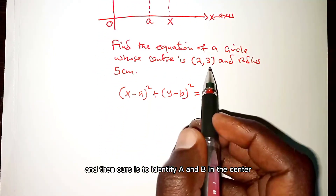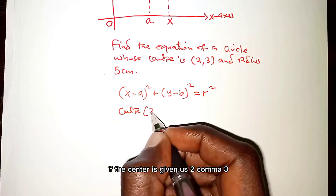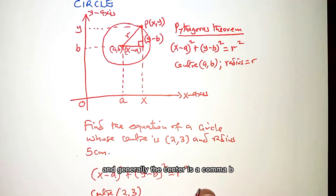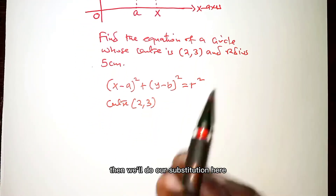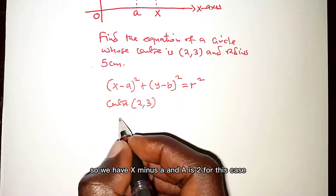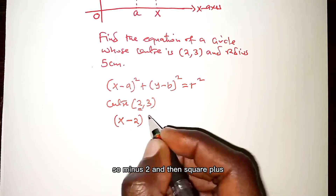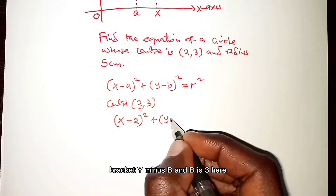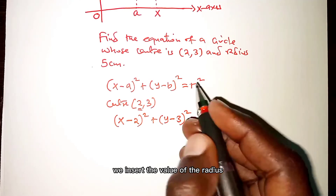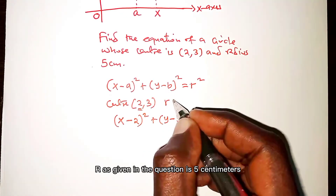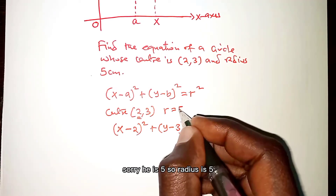We need to identify a and b from the center provided. The center is given as (2, 3) and generally the center is (a, b), so a and b correspond to these values in the equation. We substitute: x minus a where a is 2, so (x minus 2) squared, plus (y minus b) where b is 3, so (y minus 3) squared. On the right-hand side we insert the radius R, which is 5.